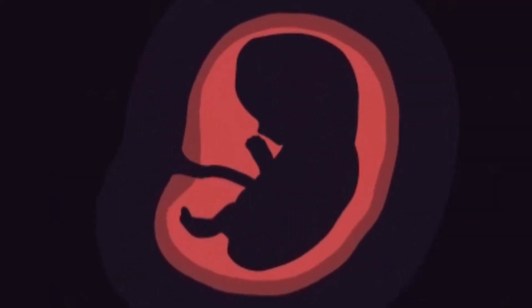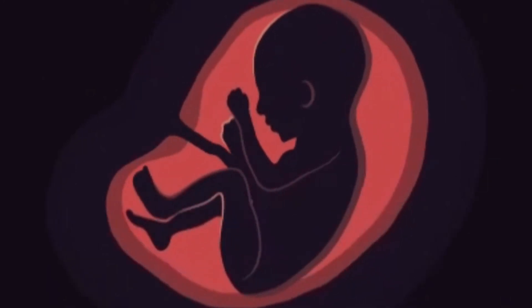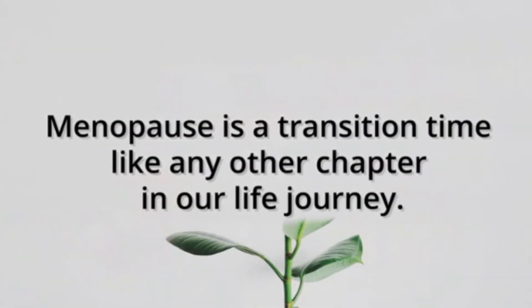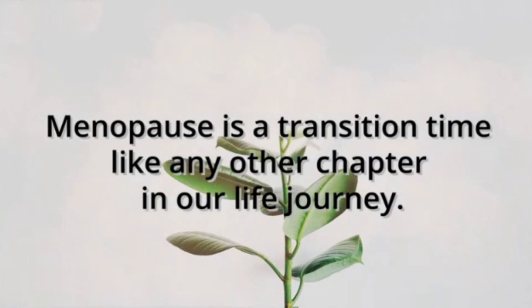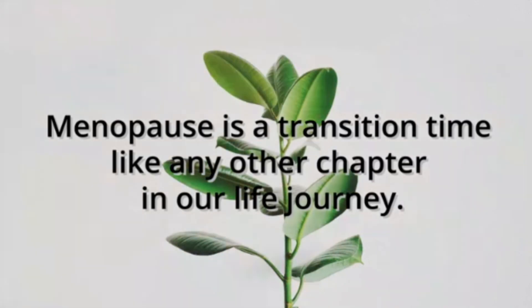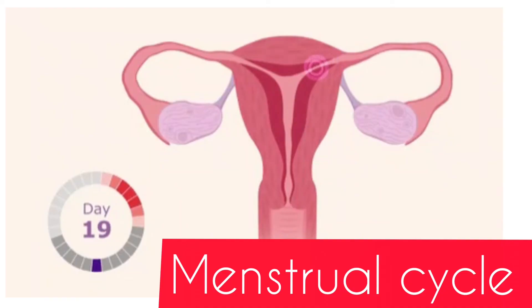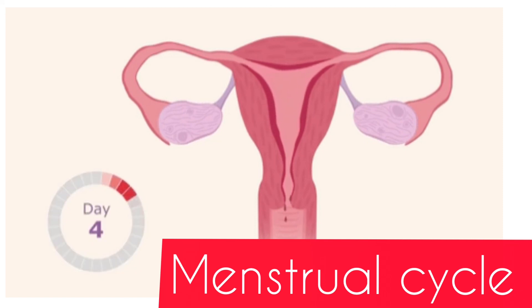All stages of the menstrual cycle stop during pregnancy and there is no menstruation. The menstrual cycle permanently stops in females at around 50 years of age, and this is called menopause. This was all about the menstrual cycle in human primates and its various phases — hope you understood the various stages with the help of the animation. Thanks for watching.